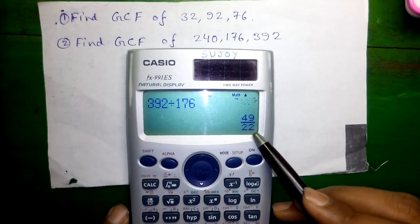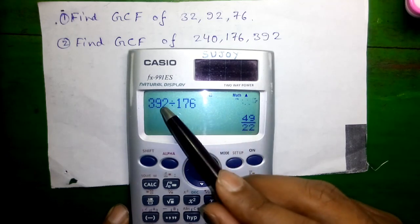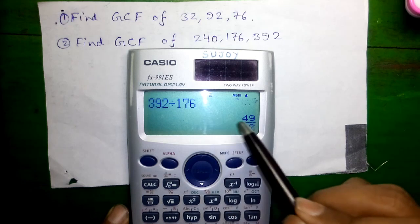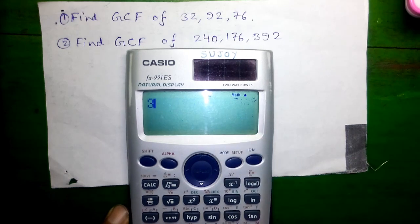We got 49 by 22. Now we'll divide 240 by the common GCF 8.